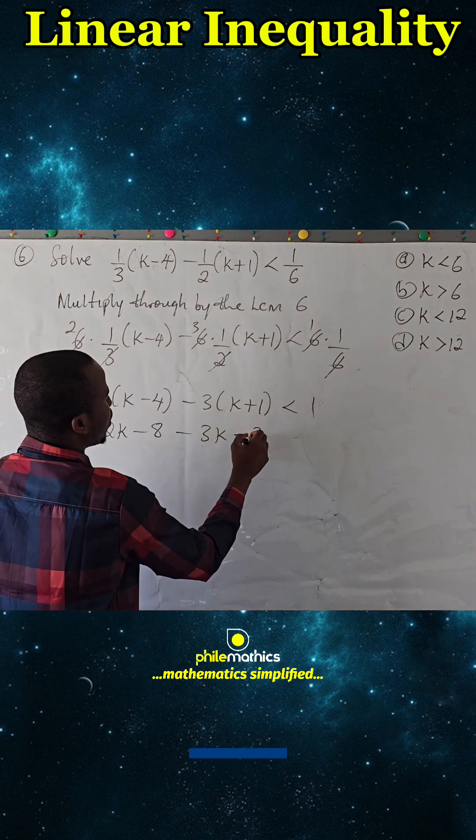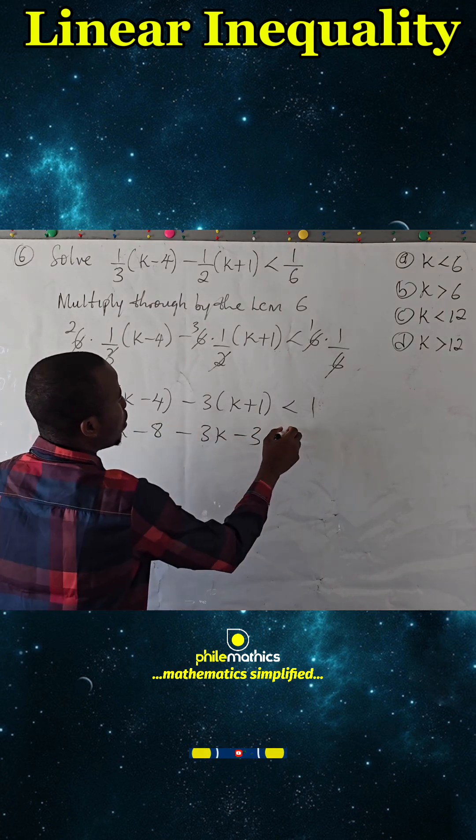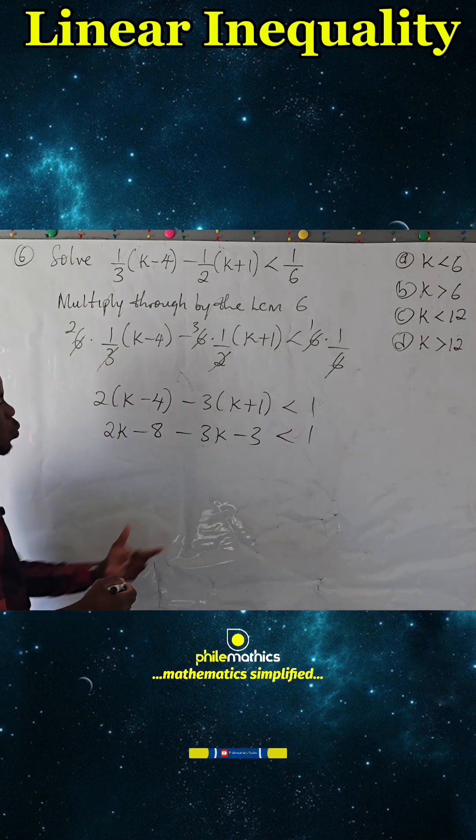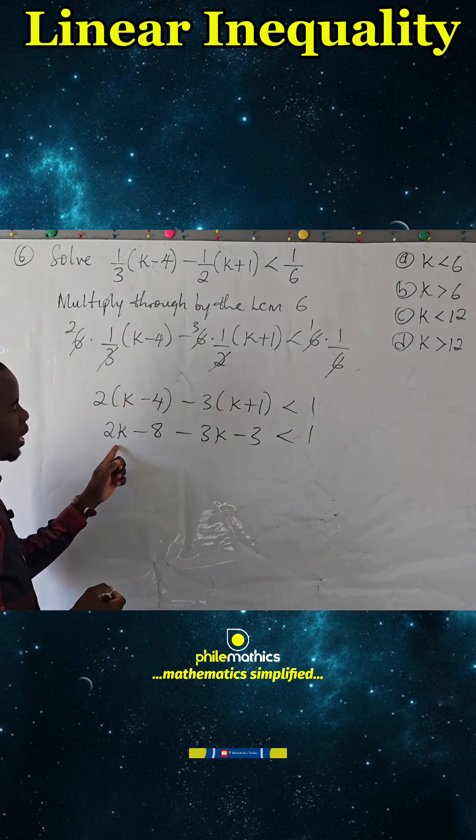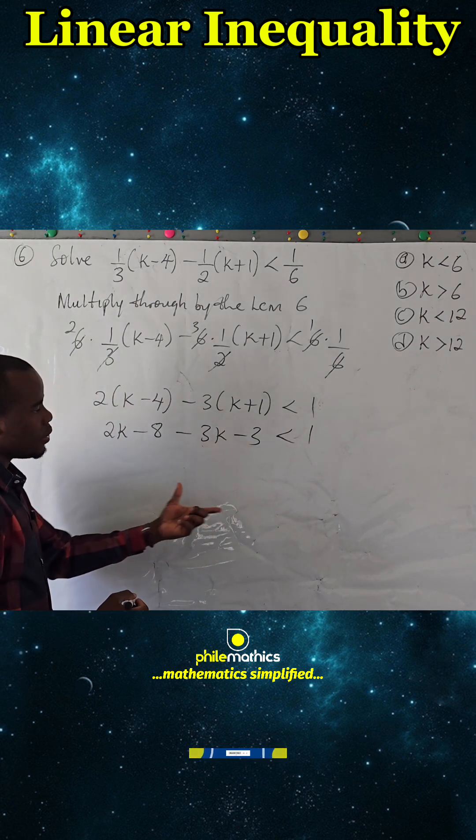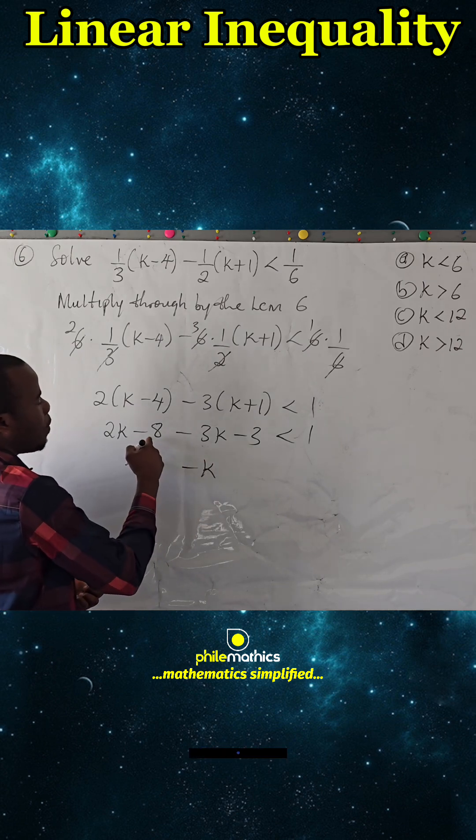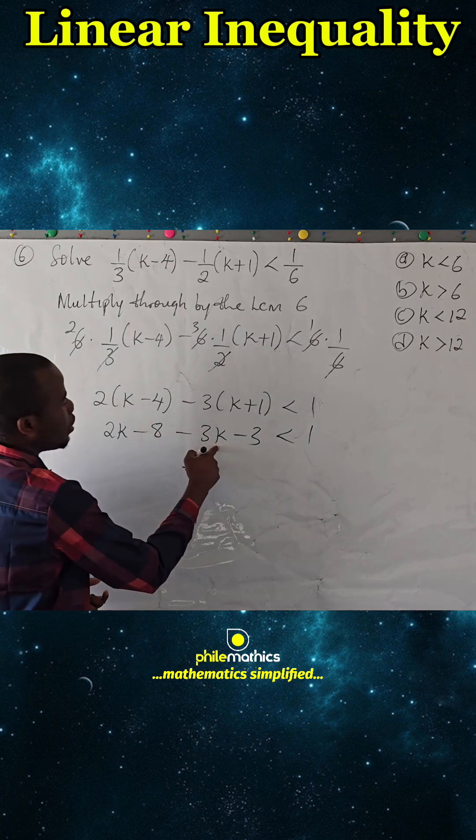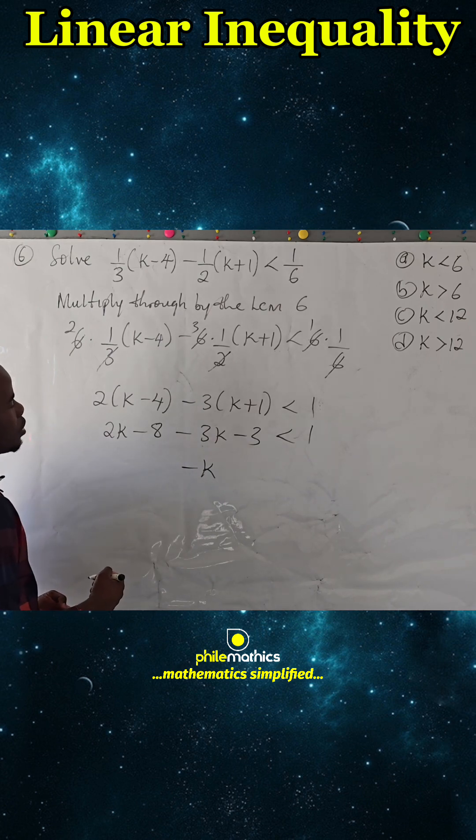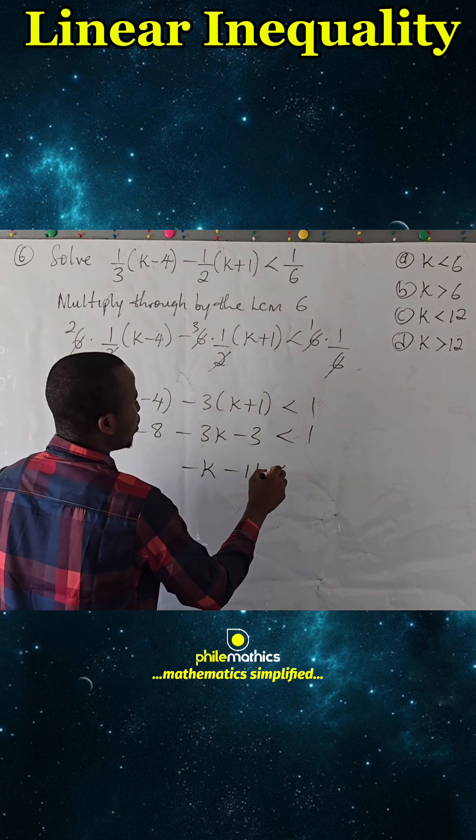We collect like terms. Two k minus three k is minus k, and minus eight minus three is minus eleven. So this is -k - 11 < 1.